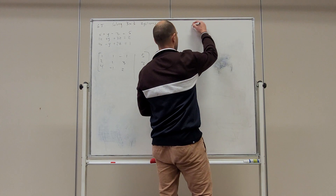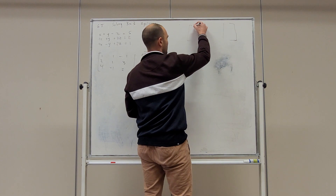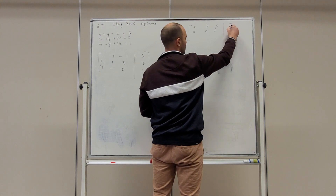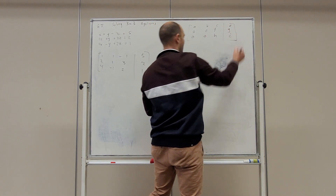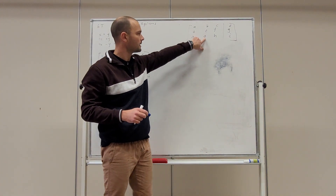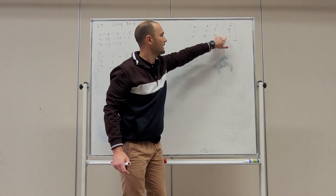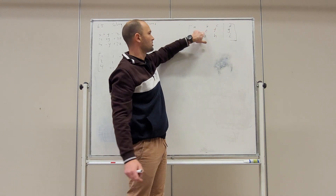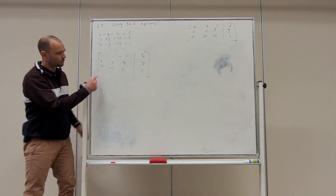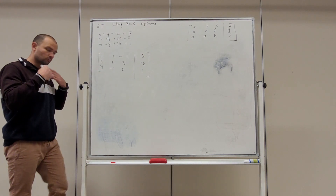Now basically we're trying to manipulate the system so that it looks like this: we have some numbers a, b, c, d in the top row; a zero, e, f, g in the second row; and then two zeros, h, and y in the third row. What we're trying to do is break the system down so that we have two zeros, giving us a solution for z — because we'll have z equals some number. Then if we've solved z, we can plug z into the second equation to get y. So the first thing I'm trying to do is put a zero in the bottom-left position.